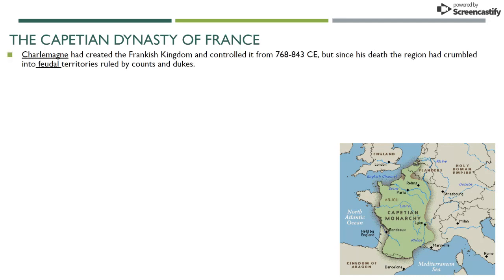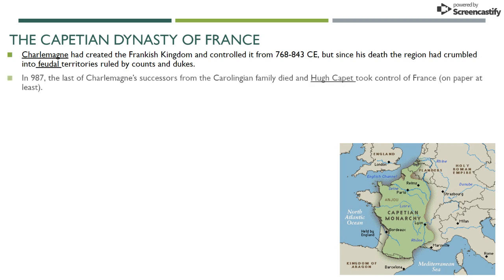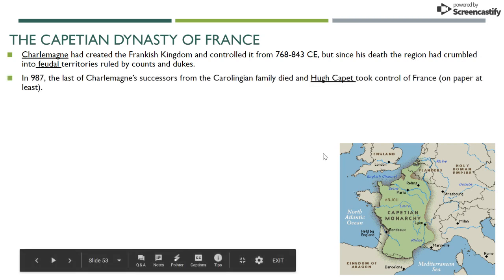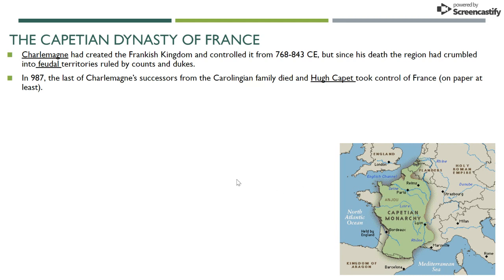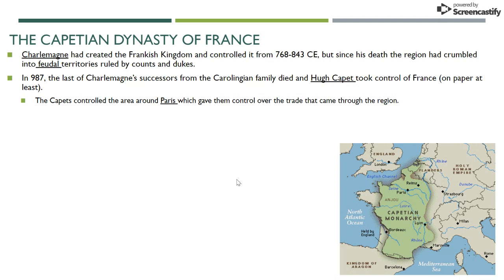France is one of the only places after the fall of the Roman Empire that actually has some sort of empire. Charlemagne, or Charles the Great, created the Frankish kingdom in the eighth and ninth centuries. But when the last of his Carolingian dynasty dies, Hugh Capet takes over. He lived in Paris, of course the modern-day capital of France, and the Capetian dynasty is going to start a trend we'll see finished later on in France.